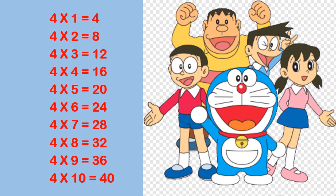Let us revise the table of 4. 4 1s are 4. 4 2s are 8. 4 3s are 12. 4 4s are 16. 4 5s are 20. 4 6s are 24. 4 7s are 28. 4 8s are 32. 4 9s are 36. 4 10s are 40.